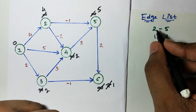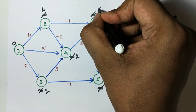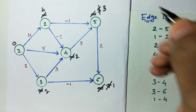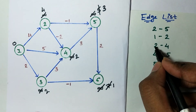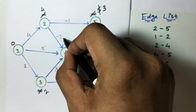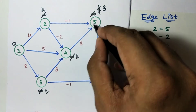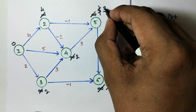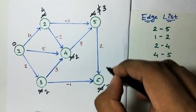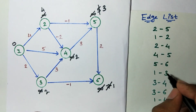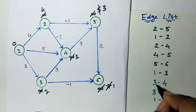Now let us perform the second iteration in the same manner as the first. Edge 2 to 5: 4 minus 1 is 3, change because 3 is smaller than 5. Edge 1 to 2: 0 plus 4 is 4, don't change. Edge 2 to 4: 4 minus 2 is 2, don't change. Edge 4 to 5: 2 plus 3 is 5, greater than 3, don't change. Edge 5 to 6: 3 plus 2 is 5, greater than 1, don't change. Edge 1 to 3: 0 plus 2 is 2.